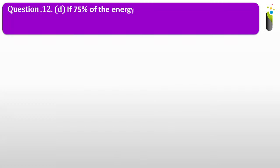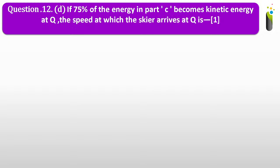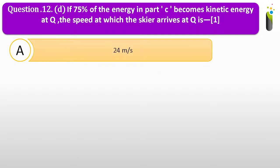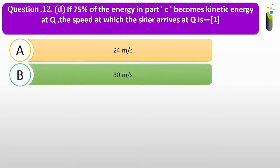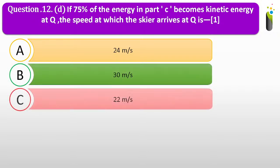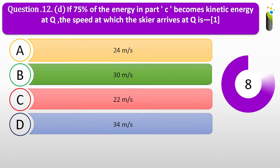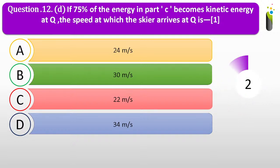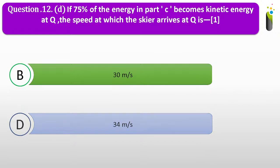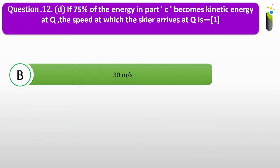Question number twelve D. If 75% of the energy in part C becomes kinetic energy at Q, the speed at which the skier arrives at Q is dash. Options: A, 24 m/s; B, 30 m/s; C, 22 m/s; D, 34 m/s. The correct answer is 30 meters per second.